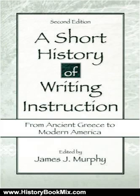This is the summary of A Short History of Writing Instruction, From Ancient Greece to Modern America by James J. Murphy. This volume provides a systematic historical survey of the methods and purposes of writing instruction in Western culture.